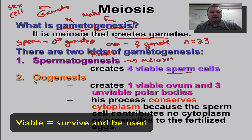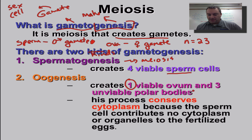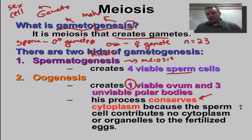In oogenesis, you only get one viable egg cell — viable meaning it can live. You also get three things that do not survive, and they're called polar bodies. The reason you're doing this is to conserve your cytoplasm.